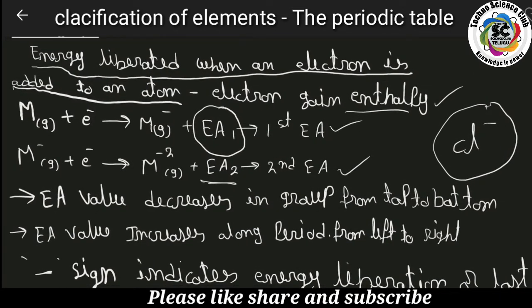Now, how do electron affinity values change in groups and periods? The electron affinity value decreases in groups from top to bottom. Going top to bottom in a group: atomic number increases, the number of shells increases, and atomic radius increases.